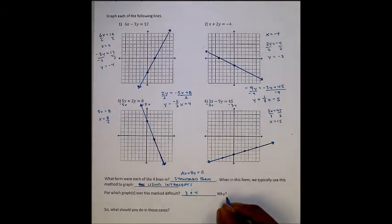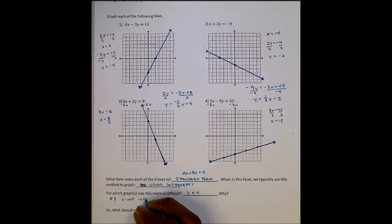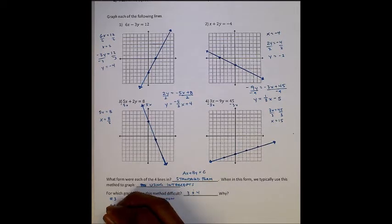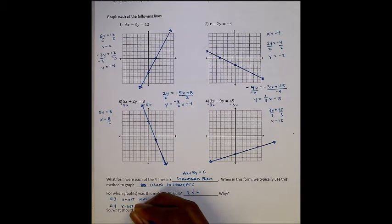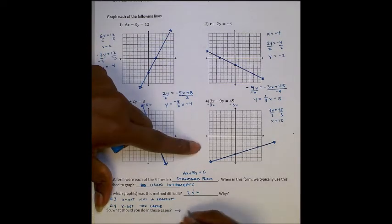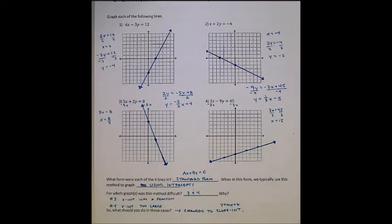But it was difficult for numbers 3 and 4. It was difficult because for number 3, the x-intercept was a fraction, and we can't graph fractions very well. And for number 4, the x-intercept was too large. It was off our graph, and so we couldn't graph it. So what did we do in those cases? What we did was we changed it to slope-intercept form. Whenever we're having difficulty with graphing, slope-intercept form should be our fallback because we should be very comfortable with it, and usually we'll find a way to make that work.